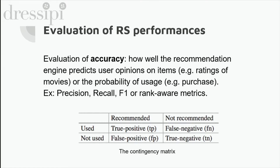The evaluation is carried out by building the so-called contingency metrics, where we compare what our system is recommending versus the actual user choices. For example, we define a true positive as an item that is actually recommended by the system and at the same time selected by the user. According to this, we can define several metrics such as precision, recall, or rank-sensitive metrics — since what we usually suggest to the user is a ranking of recommendations, typically as a vertical or horizontal list, and we want to give more value to a correct item appearing at the top of the list rather than at the bottom.